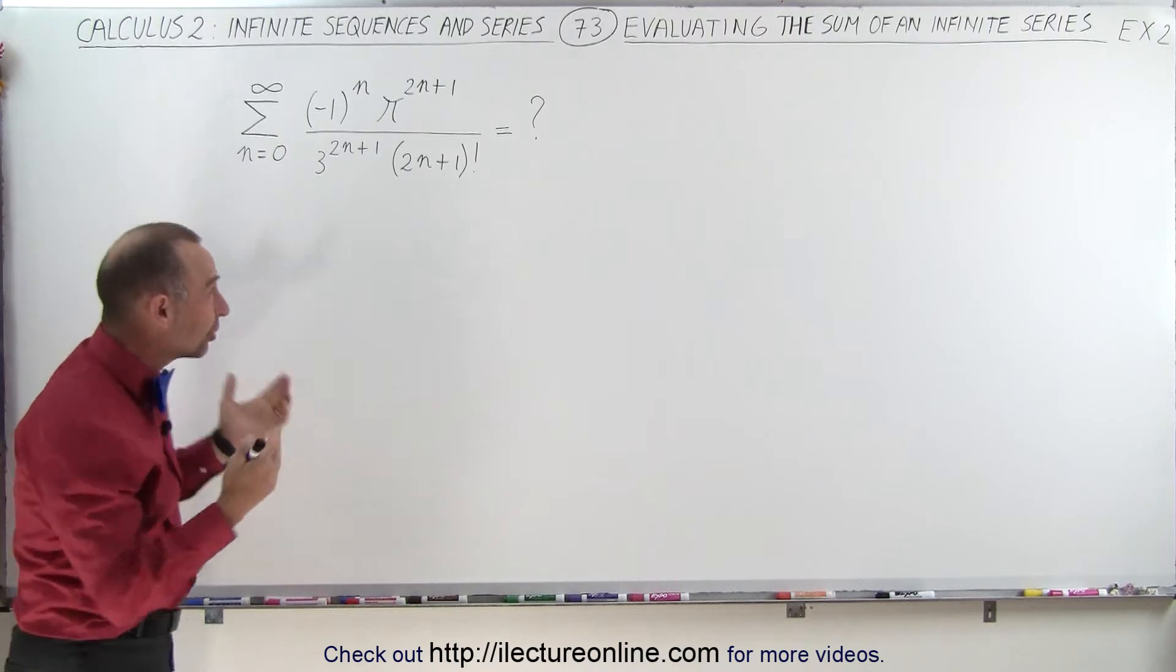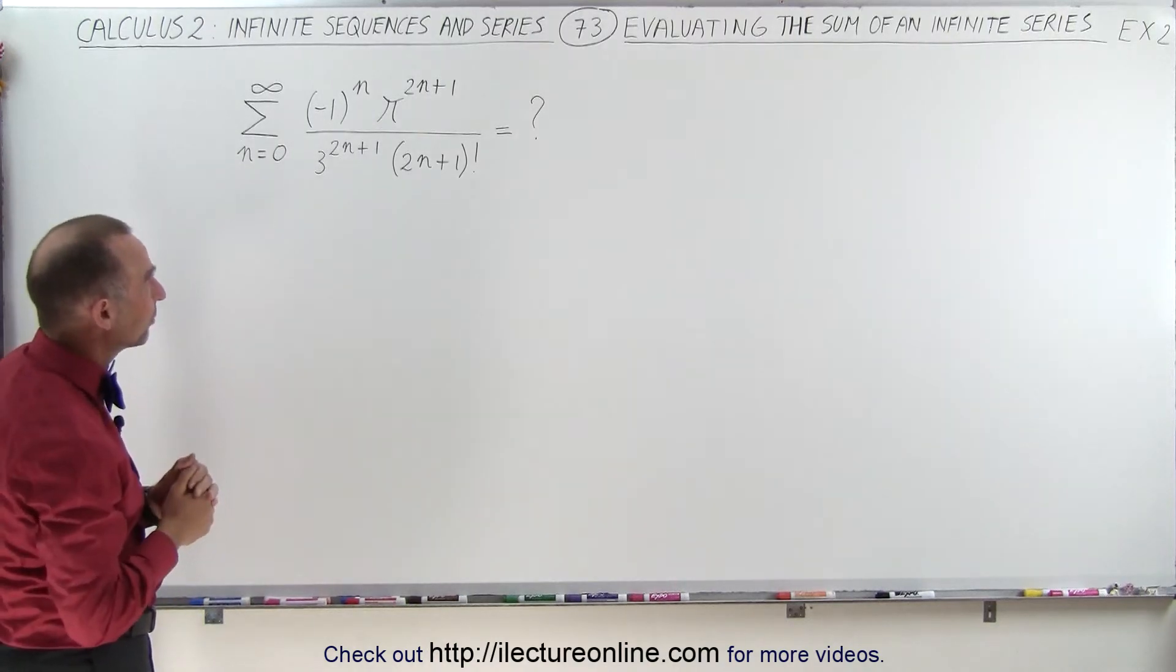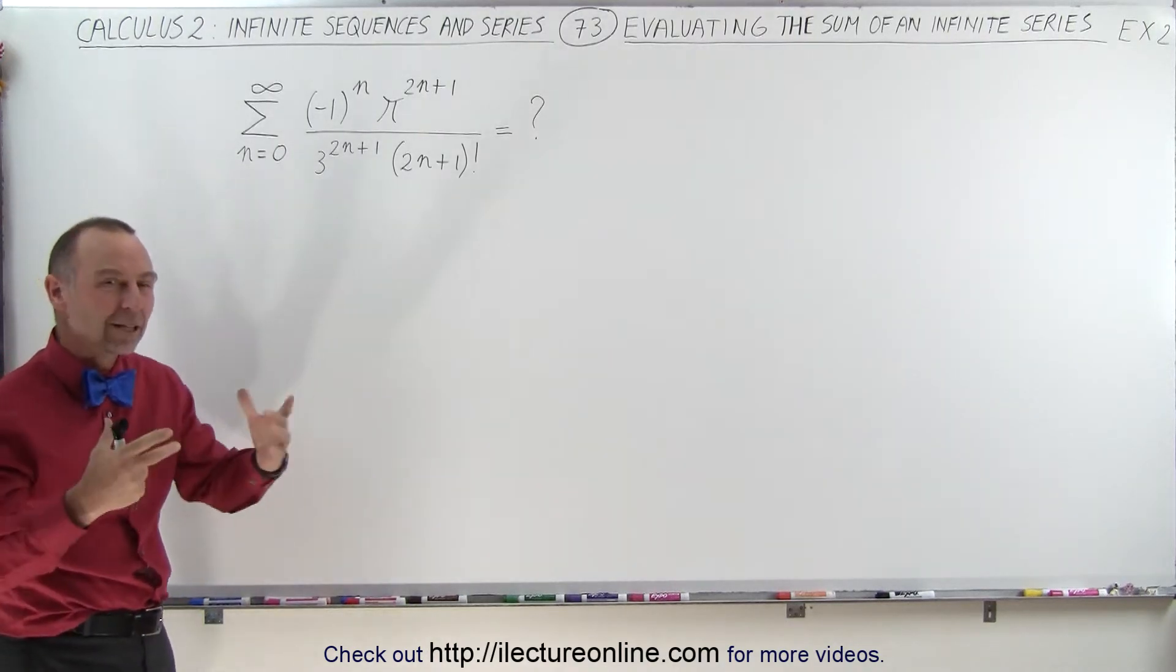So the idea is to look at this and say, well, that must look similar to something else, some Maclaurin series that I can convert it to.